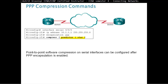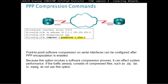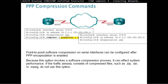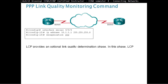For compression, we can use Predictor or Stack. Because this option invokes a software compression process, it can affect system performance — so really, don't use it that much, because it is software compression and it does make the routers lag. If all files are already being compressed, such as ZIP files, TAR, or MPEG, do not use this option. Both sides have to use the same compression method.